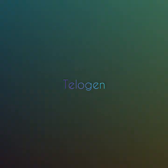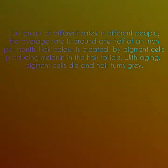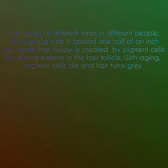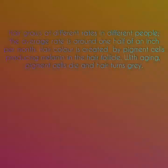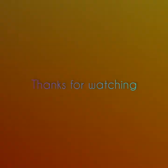A new hair begins the growth phase, pushing the old hair out. Hair grows at different rates in different people; the average rate is around one half of an inch per month. Hair color is created by pigment cells producing melanin in the hair follicle. With aging, pigment cells die and hair tends to turn gray. That's all for this video, thanks for watching everyone.